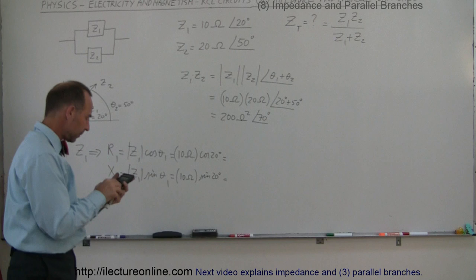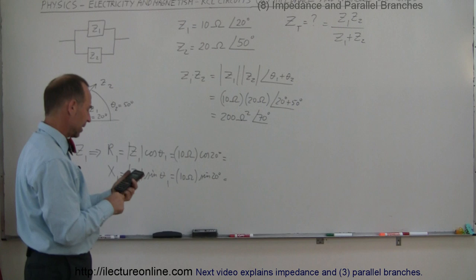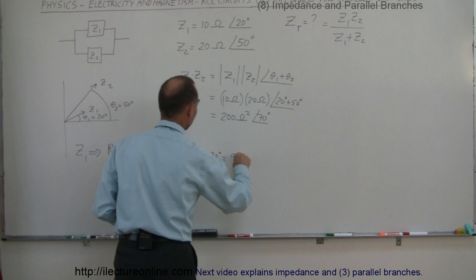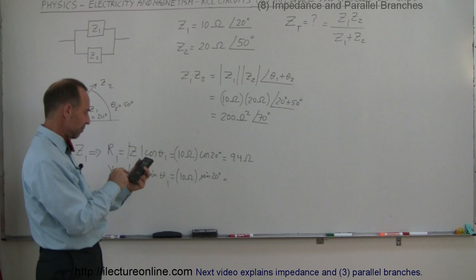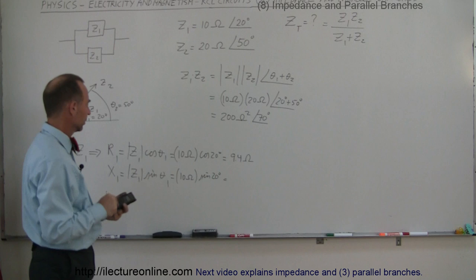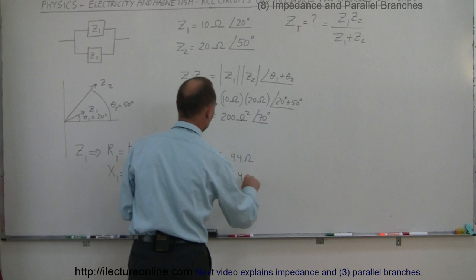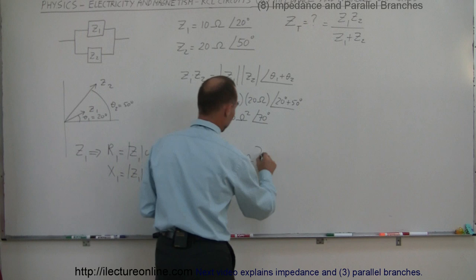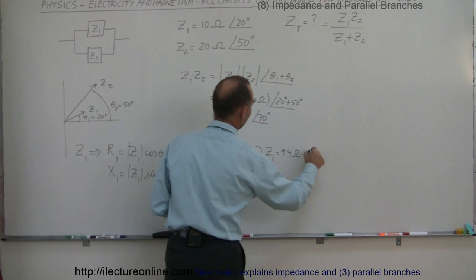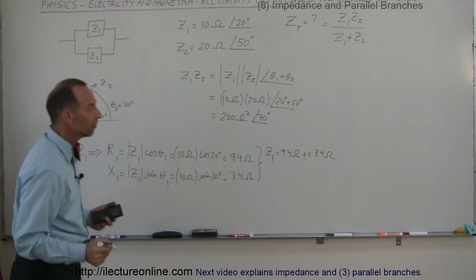Taking 10 times cosine of 20 degrees gives us 9.4 ohms — that's the real part of Z1. For the imaginary part, 10 times sine of 20 degrees gives us 3.4 ohms. So we can now write Z1 as the complex number 9.4 ohms plus j times 3.4 ohms.